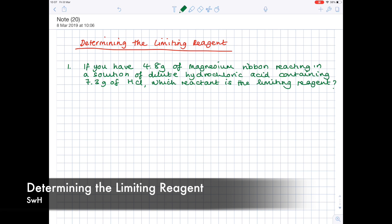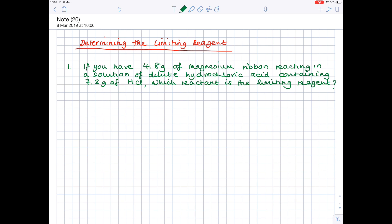In today's A-level IB chemistry video, we're going to be doing stoichiometry and we're looking at determining the limiting reagent. So question one, if you have 4.8 grams of magnesium ribbon reacting in a solution of dilute hydrochloric acid containing 7.3 grams of hydrochloric acid, which reactant is the limiting reagent?